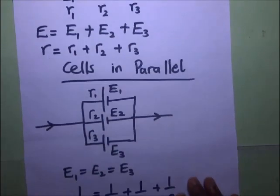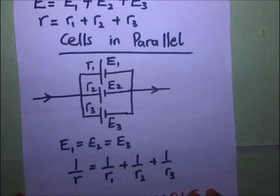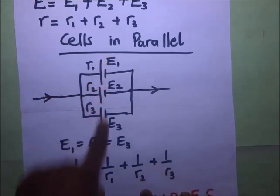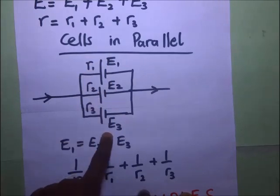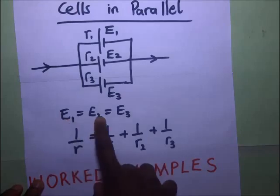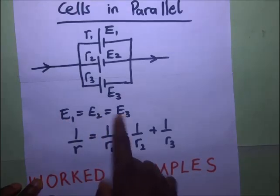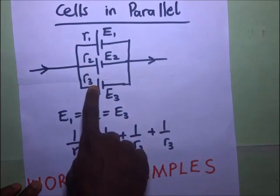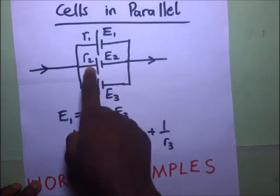For cells in parallel, we shall do just like before. For cells in parallel, the potential difference or the EMF across all these is the same. So it means that E1 will be equal to E2 will be equal to E3.